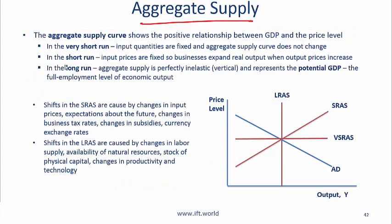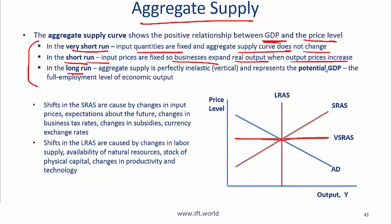Aggregate supply: The aggregate supply curve shows the positive relationship between GDP and the price level, and there are three supply curves. In the very short run, it is a horizontal line — input quantities are fixed and aggregate supply does not change. In the short run, as input prices are fixed, businesses expand real output when prices increase, giving an upward sloping curve. A business sees prices going up and produces more in the short run.